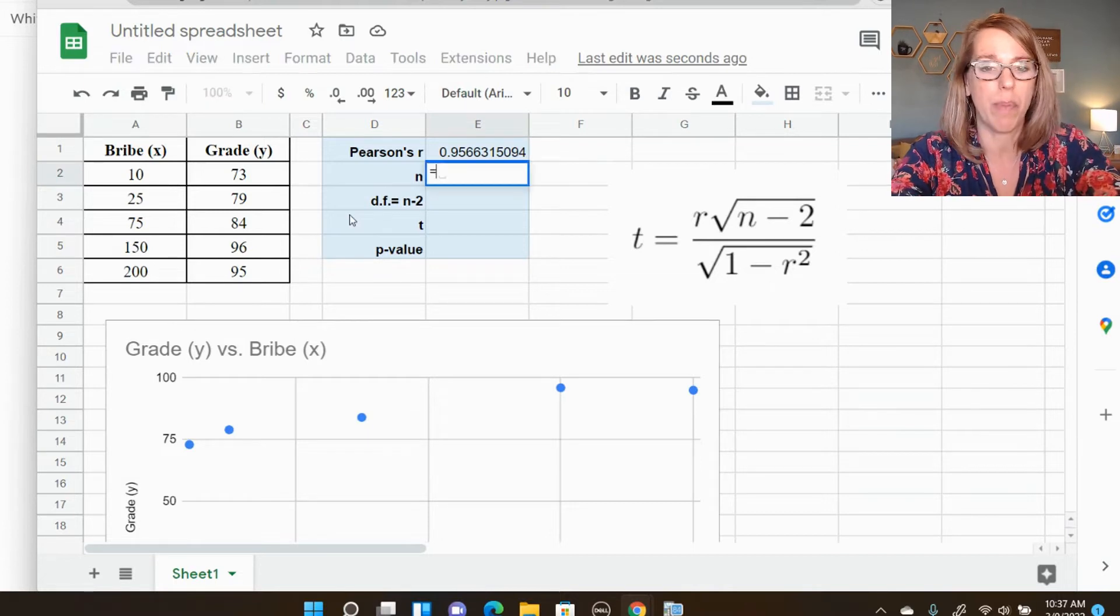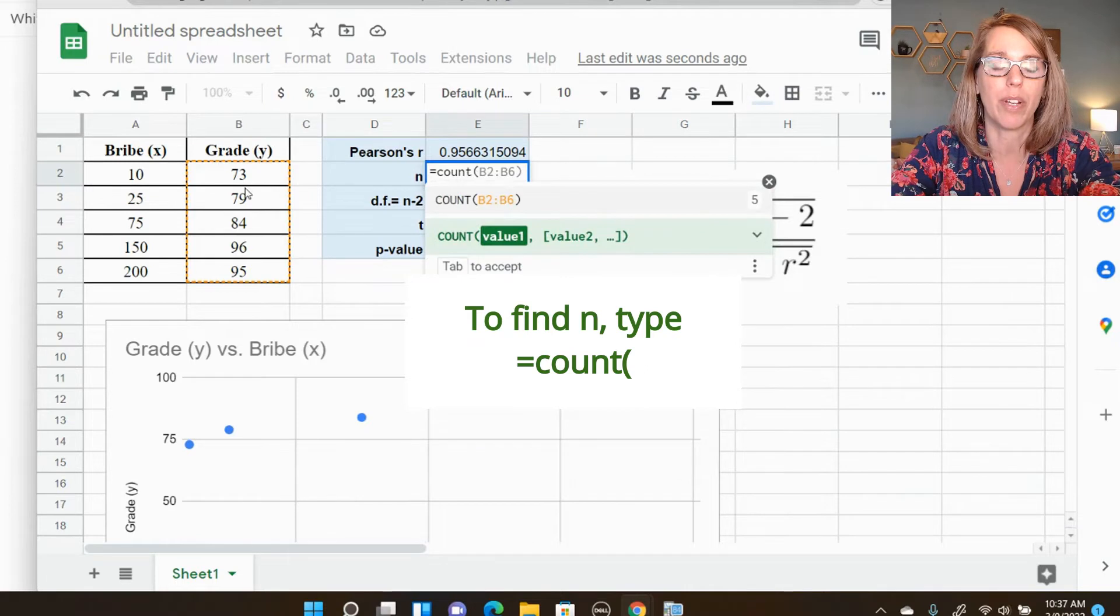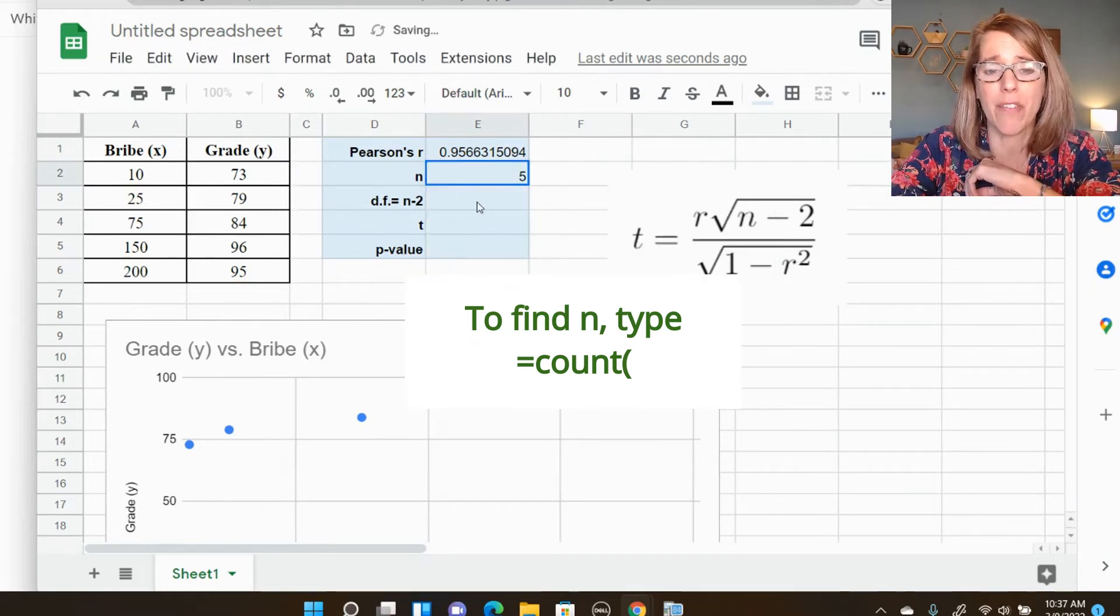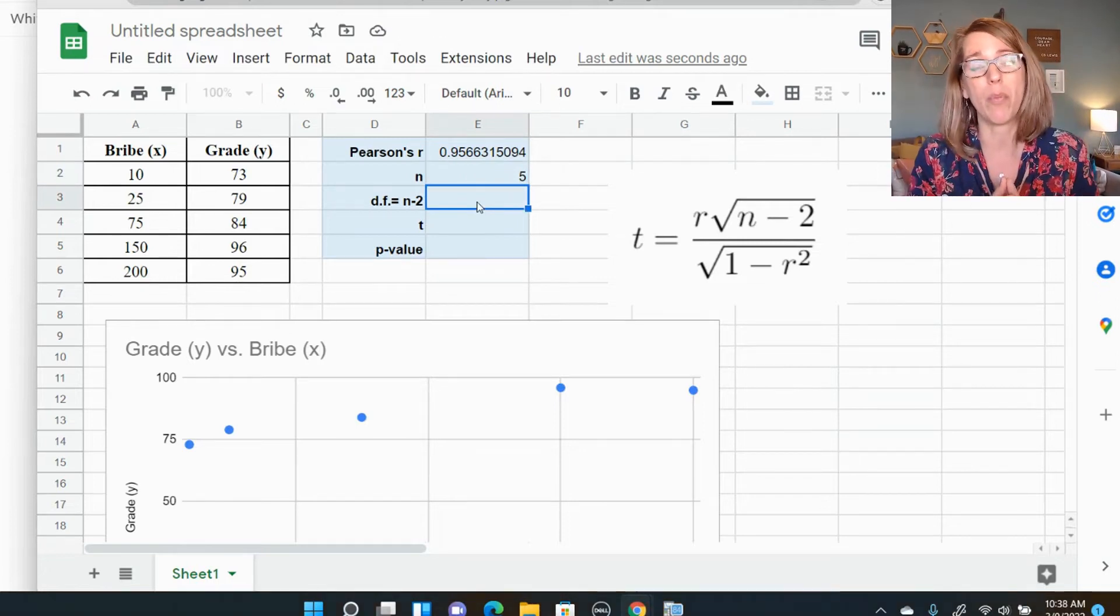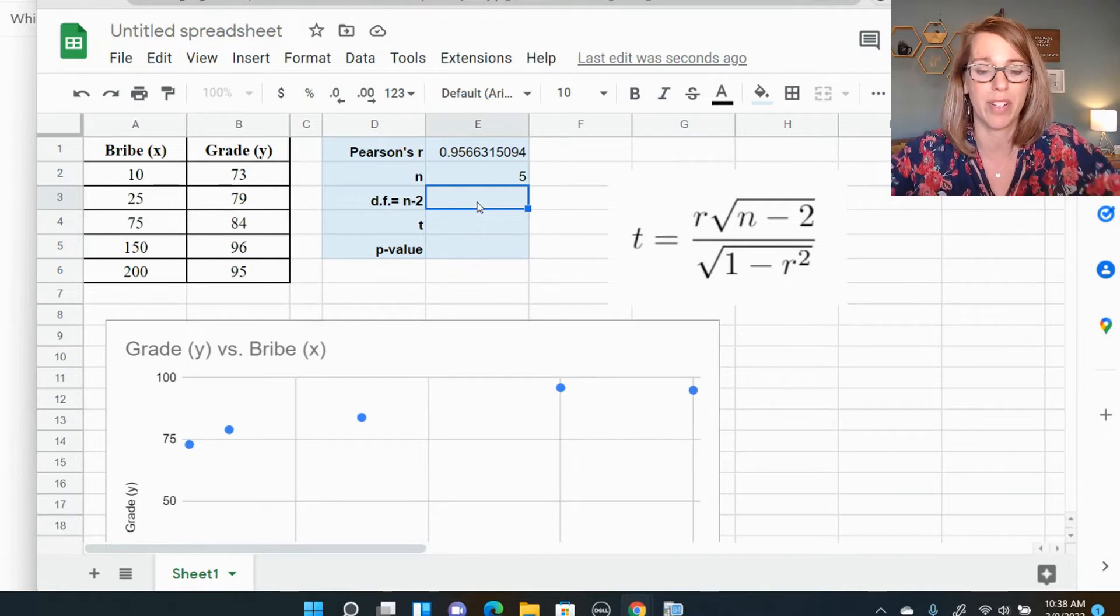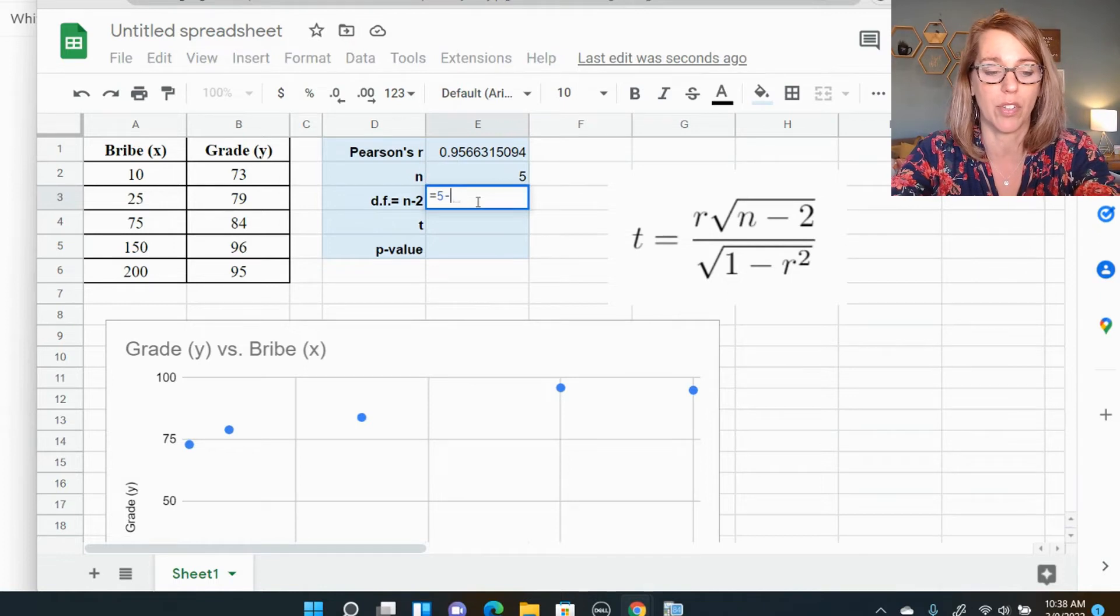N. You can do N just by counting by hand if you've got a larger data set, equals count is a nice way to go. It guessed my variable's perfect. And there are five there. Degrees of freedom. Typically, it's N minus one, but we have two variables here. So we subtract one for each variable. So this is going to be N minus two. So it's going to be five minus two or three.